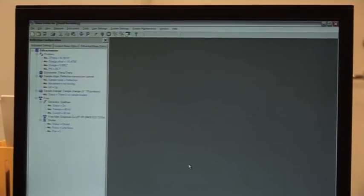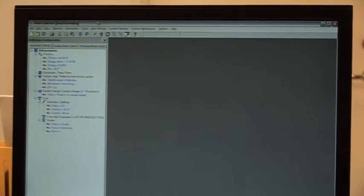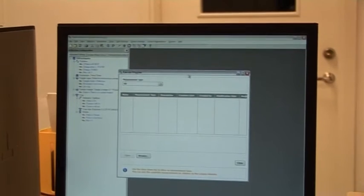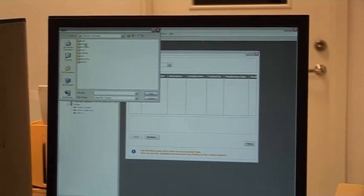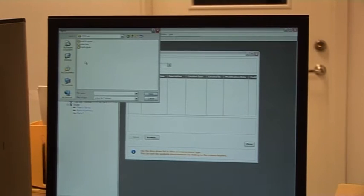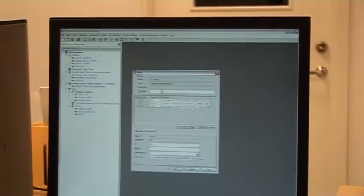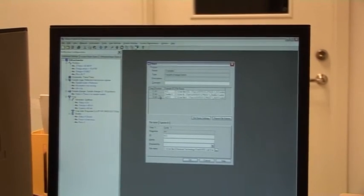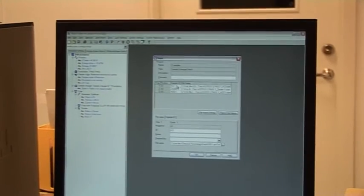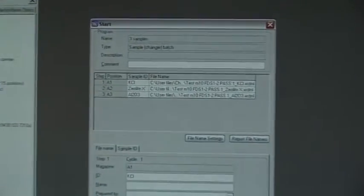That's a batch program. You can just give a very general name like three samples. So now we have created the program for running the machine. Then it's just to run it. We go to measure and pick our program. We have to pick now our batch program for the sample changer. Then we have position A1, A2, A3, that looks correct. Sample name also looks quite correct. Then we click OK.